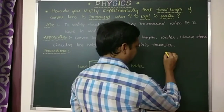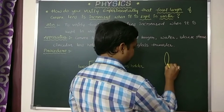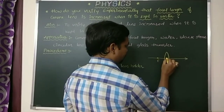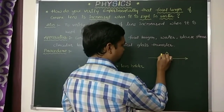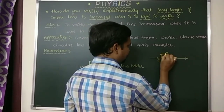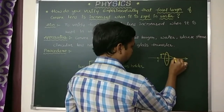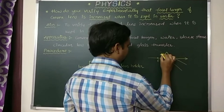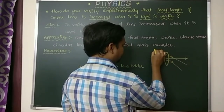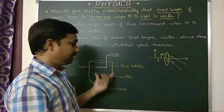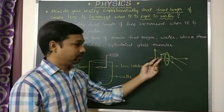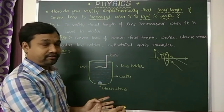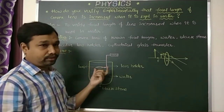If the object is placed between the focus and optic center, we will get the image on the same side. This is the concept involved in this experiment. Here, we are considering one container whose height is more than the focal length of the lens, and we are pouring water up to the maximum height.